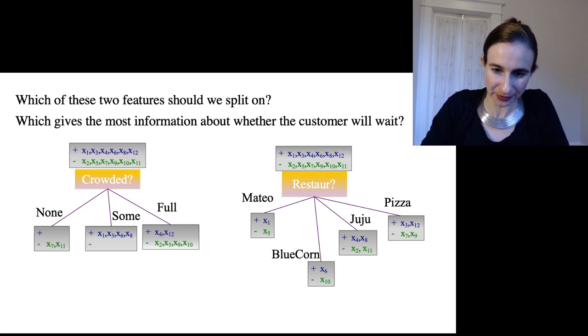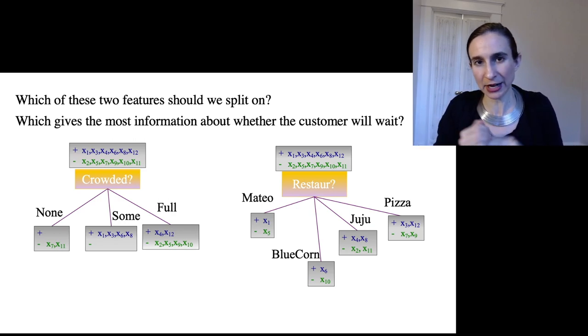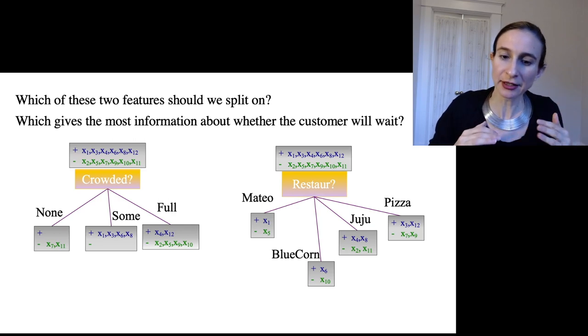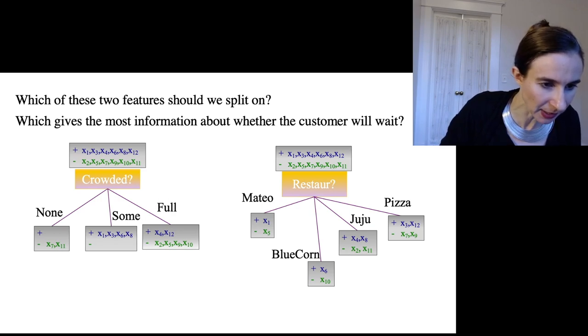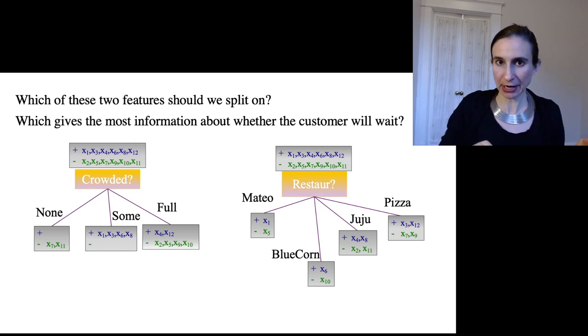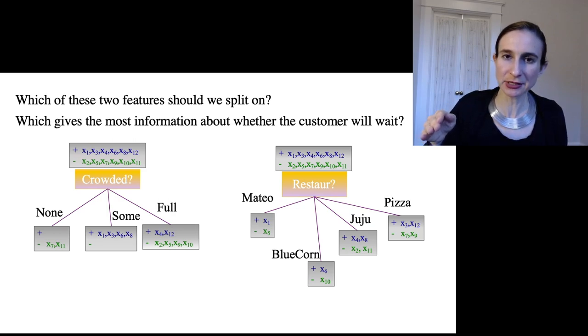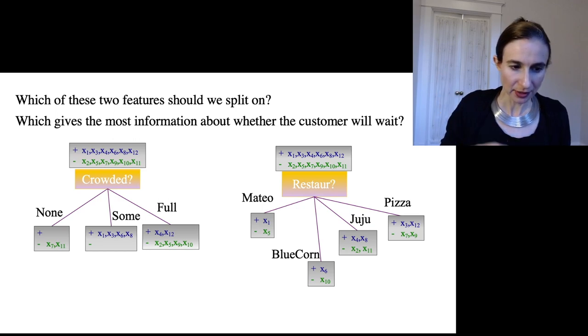So now let's do some intuition for these splitting procedures. Let's talk about two features that we're thinking about putting at the top of the tree: whether it's crowded and which restaurant it is. And I want to know, well which of these two factors gives the most information about the label? So I put all of the data at the top of both features—there's I think six positive and six negative examples. And then when if we split on crowded, as you can see, if there's no customers in the restaurant there's two negatives—both times that happened the customers chose not to wait for the table. If there are some customers in the restaurant then all four times that happened the new customers chose to wait for the table. And if the restaurant's full then two out of six times they waited and four times they left.